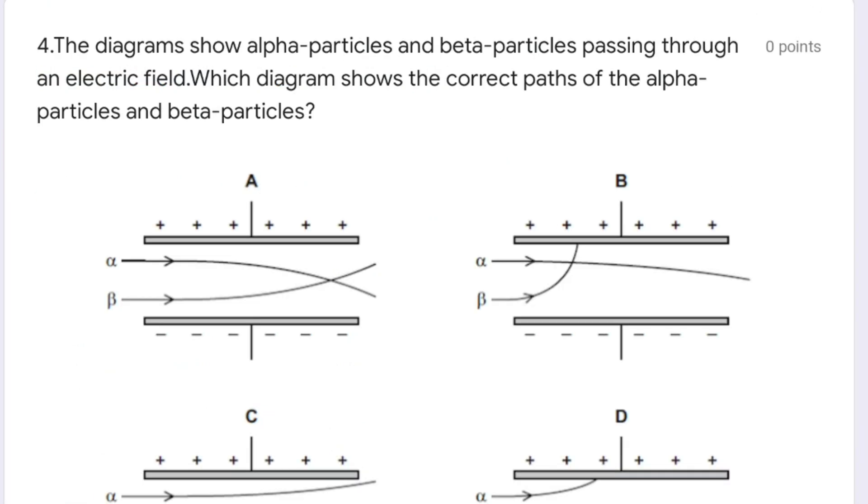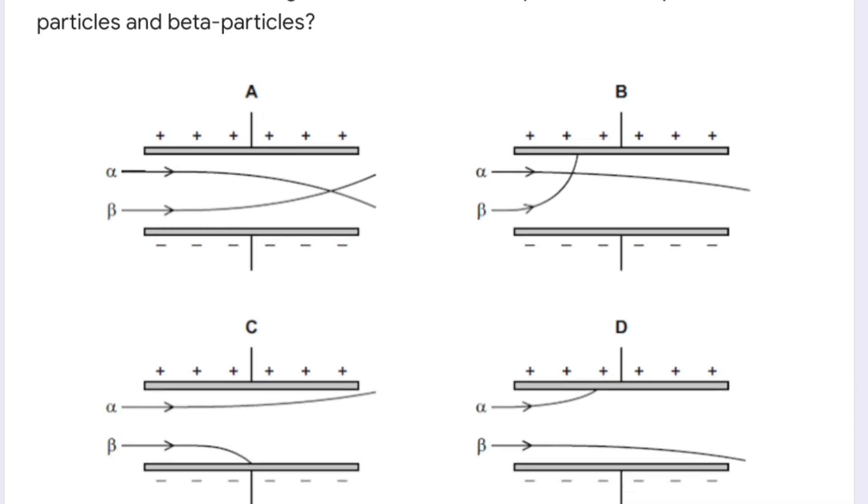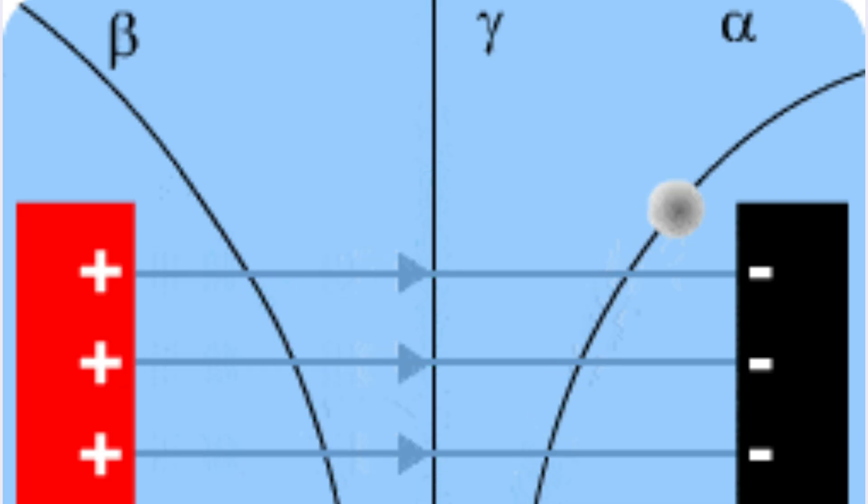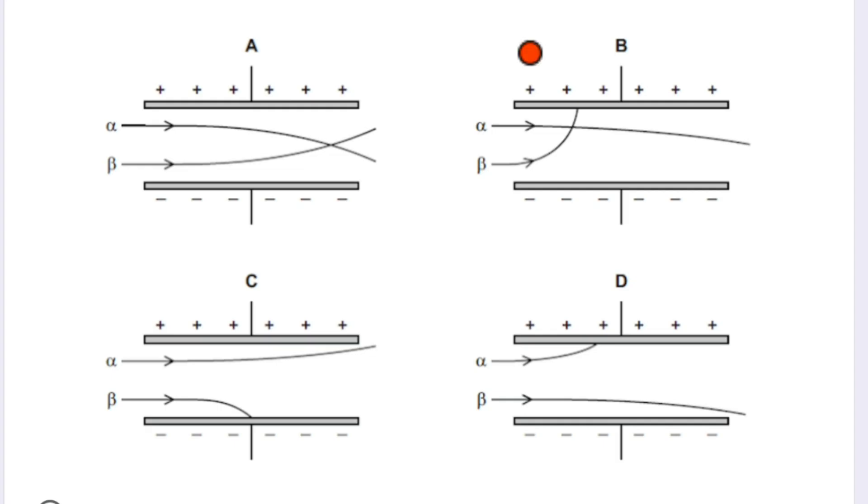Fourth question is related to the behavior of alpha and beta particles in an electric field. The diagram shows alpha particles and beta particles passing through an electric field. Which diagram shows the correct path? If you look at all four options, option B looks correct because alpha is a heavy mass particle and is positively charged, so it will deflect towards the negative plate. Beta is a massless, fast-moving electron, negatively charged, so it will move towards the positive plate. Beta will deflect higher than the alpha particle.